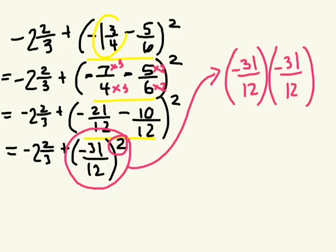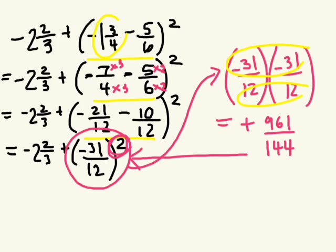How do you multiply fractions? Multiply the numerators and then multiply the denominators. So let's just do this on the side here. We have a negative base and an even exponent. The result will be positive. 31 times 31? 961. And 12 times 12? 144. So we've now simplified this power.